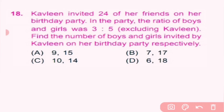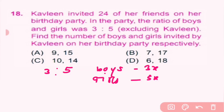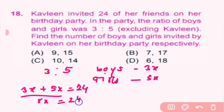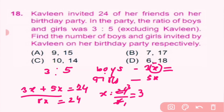Question number 18: Kavlin invited 24 of her friends on her birthday party. The ratio of boys to girls was 3:5, excluding Kavlin. Find the number of boys and girls. Let boys be 3x and girls be 5x. Total: 3x plus 5x equals 24, so 8x equals 24 and x equals 3. Boys equals 3 into 3 equals 9, and girls equals 5 into 3 equals 15. So there are 9 boys and 15 girls invited. A is correct.